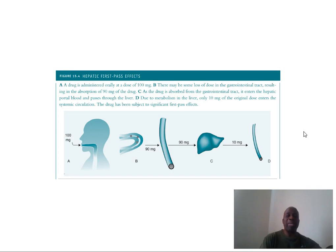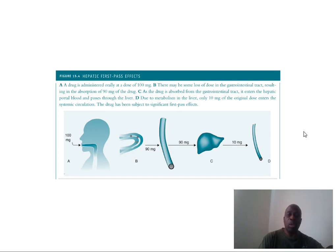This diagram explains the hepatic first pass effect. As you can see, 100 milligrams of the drug is administered via the oral route. Once it reaches the intestine, 90 milligrams of the drug is actually absorbed into the bloodstream. Once it reaches the liver, 90 milligrams of the drug undergoes metabolism. After metabolism, only 10 milligrams of the drug will actually come out of the liver and enter the systemic circulation, which means only 10 milligrams is available for drug action.